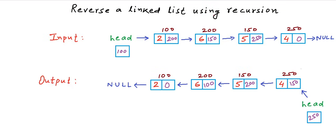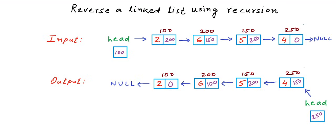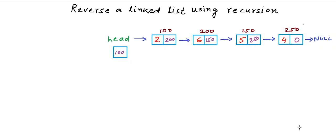After reversal, the output should be like this. The variable head should store the address of the last node in the original list. The last node was at address 250, and we will go from 250 to 150, 150 to 200, 200 to 100, and 100 to null. We have already seen how to reverse a linked list using the iterative method. Let us now see how to solve this problem using recursion.